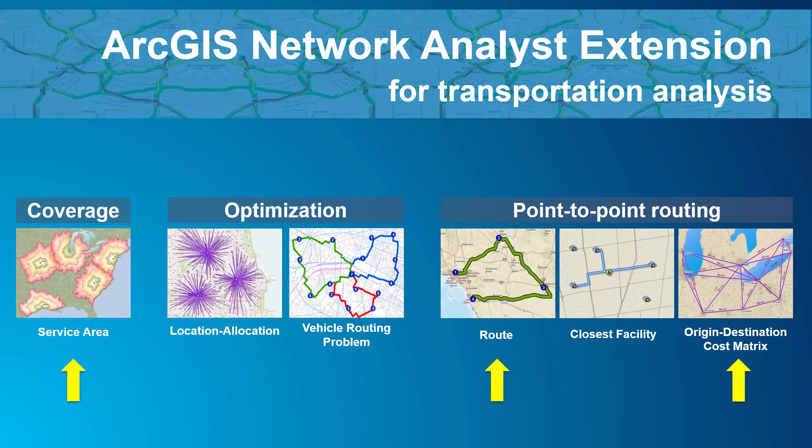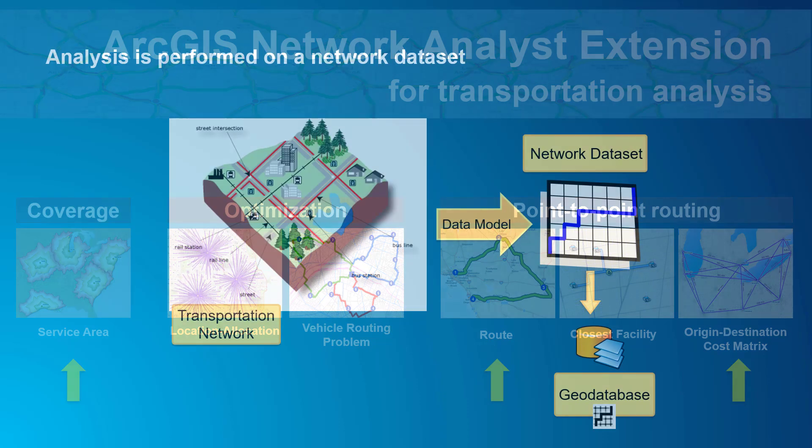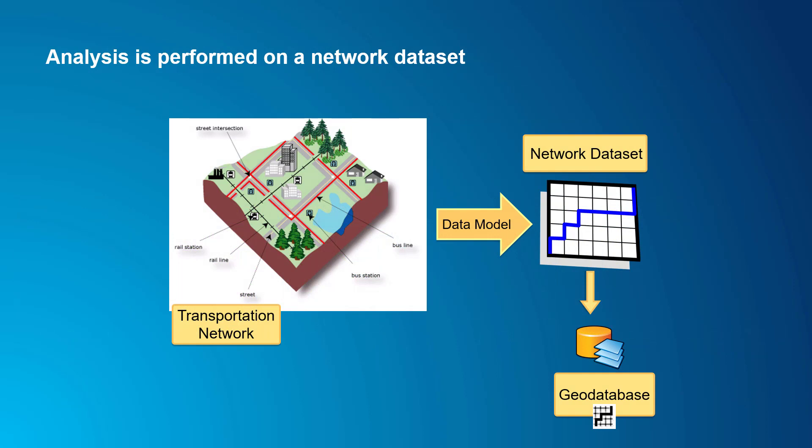Network Analyst has several solvers. The ones relevant to today's discussion are service area, route, and origin-destination cost matrix. Underlying all Network Analyst workflows is a network dataset. When you perform an analysis, you have to choose which network you want to use. The network dataset includes street features and also attributes describing travel times and distances, restrictions for travel, etc. In our case, we're also going to include public transit stops, lines, and schedules in the network dataset so we can model travel by public transit.